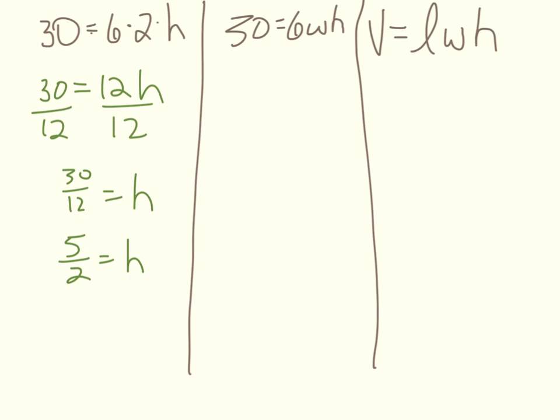Okay, so what about this next one? What would we do over here? We still need to get H by itself. And what's the operation going on right here? Yeah, it's 6 times W times height, right? Okay, so then what's the opposite operation that we're going to use? Division. Okay, so you can do this in one step if you're really keen on it, but if you're not, you can do it in two steps. That's fine. Or you can just do it all at once.